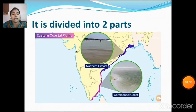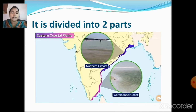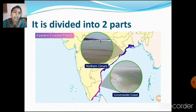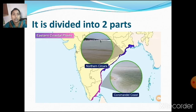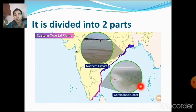The eastern coastal plain is divided into two parts. The first part, starting from West Bengal, is called the Northern Sarkars. The second one is the Coromandel coast, which lies below the Northern Sarkars. So the first one is the Northern Sarkars starting from West Bengal, and the second one is the Coromandel coast.